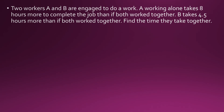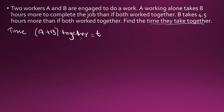2 workers A and B are engaged to do a work. A working alone takes 8 hours more to complete the job than if both worked together. B takes 4.5 hours more working alone than if both work together. Find the time they take together. Let the time taken when both work together be T. The total efficiency is 1 by T, which equals efficiency of A plus efficiency of B.